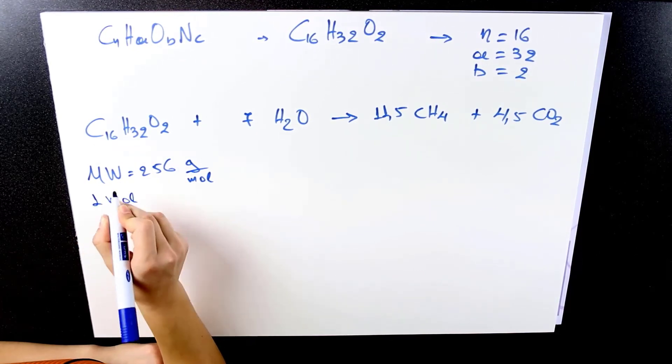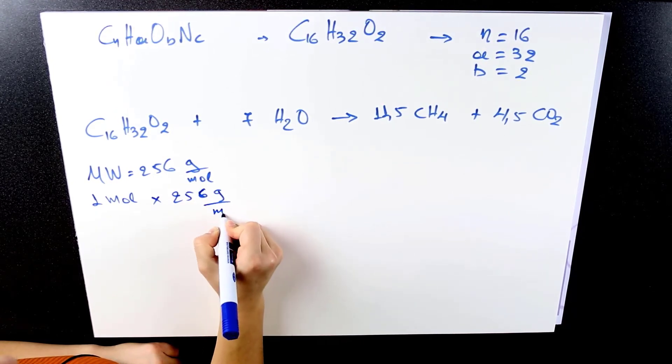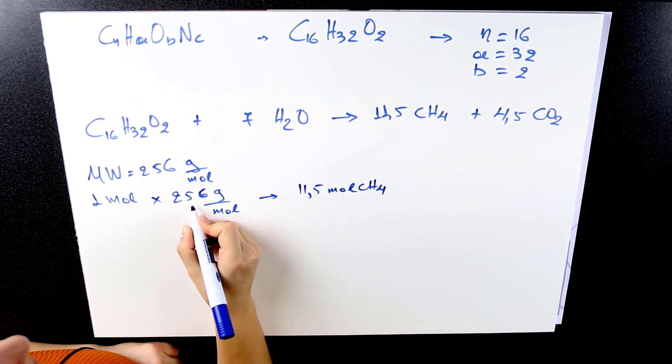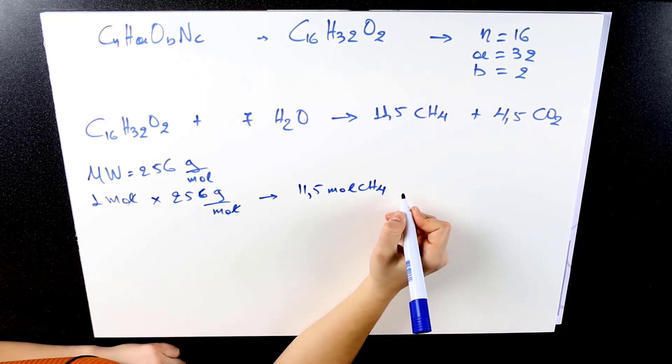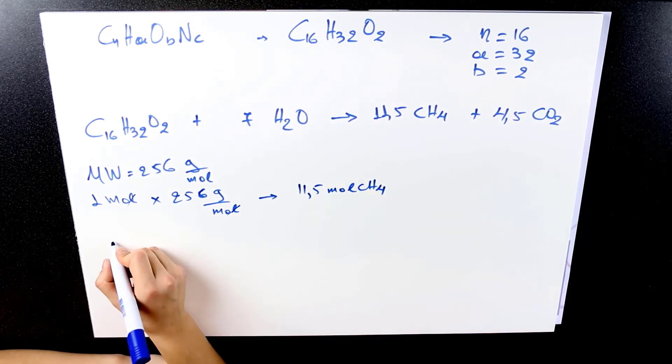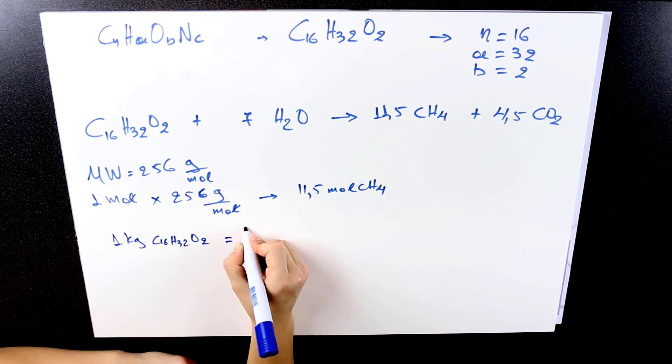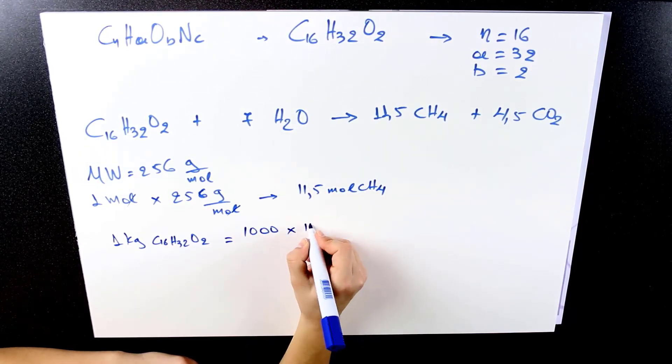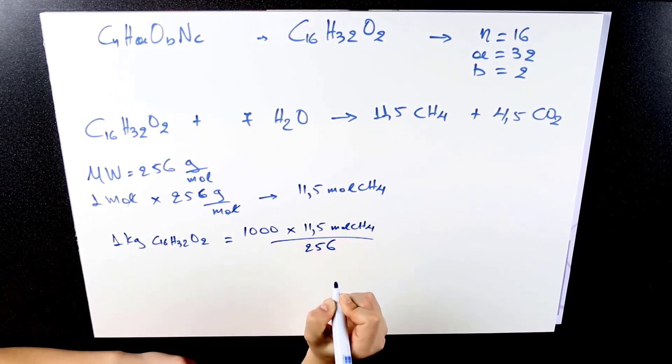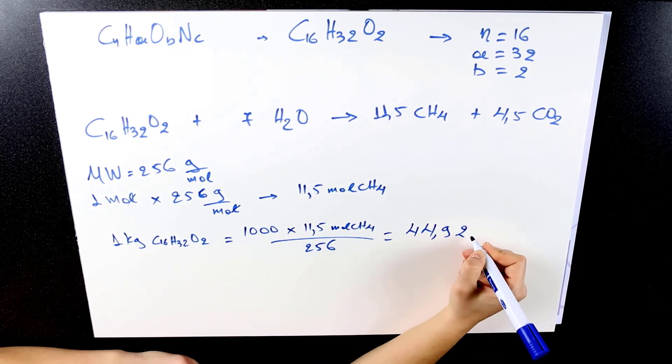If 1 mole of palmitic acid produces 11.5 moles of methane, then 256 grams of palmitic acid will produce 11.5 moles of methane. To see how many moles of methane will be produced by 1 kilogram of palmitic acid, we simply multiply 1000 grams of palmitic acid per kilogram by 11.5 moles of methane and divide by the molar mass of 256. That gives us 44.92 moles of methane per kilogram of palmitic acid.